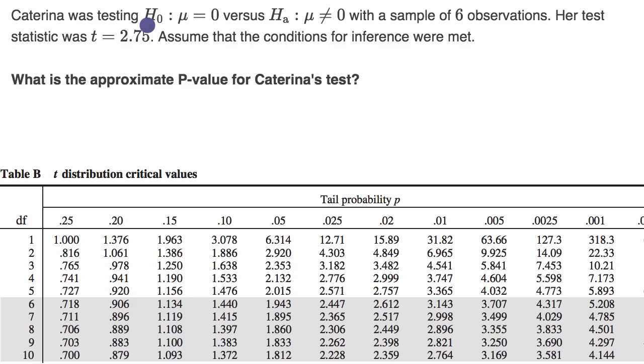Katarina was testing her null hypothesis that the true population mean equals zero versus her alternative hypothesis that it's not equal to zero. She takes a sample of six observations, and her test statistic was t equals 2.75. Assume that the conditions for inference were met. What is the approximate p-value for Katarina's test?